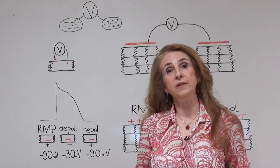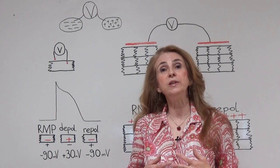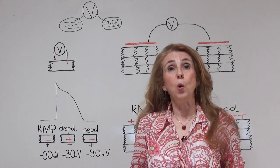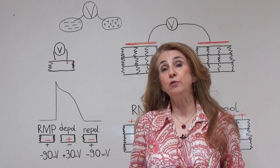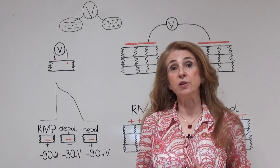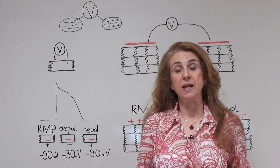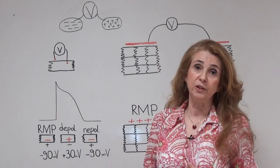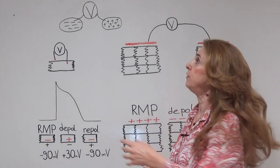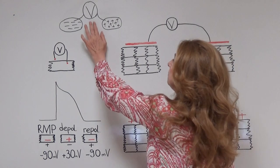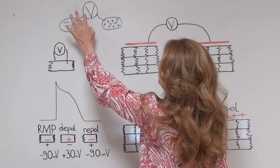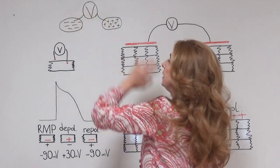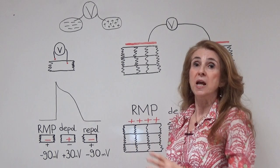The electrical potential differences recorded in our body are called bioelectrical potential differences. These are recorded by a very sensitive voltmeter which has two electrodes.